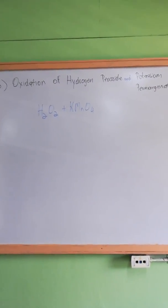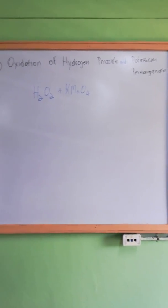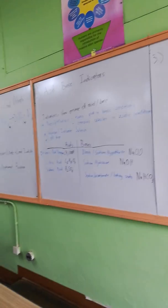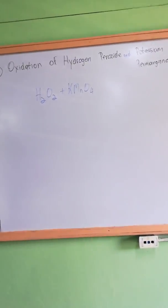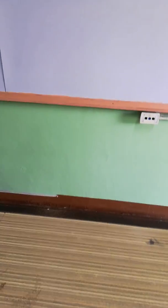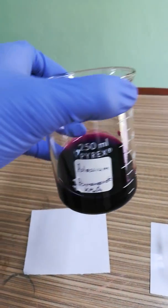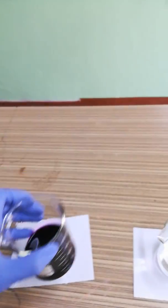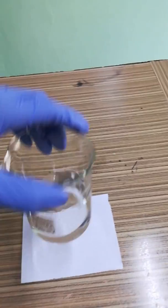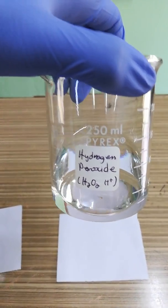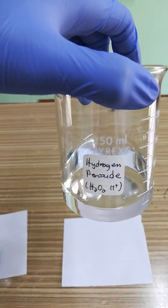The third experiment is the oxidation of hydrogen peroxide and potassium permanganate. I didn't write a formula because it's a bit tricky to explain, so I'll just show you the experiment itself. This purple thing is potassium permanganate KMnO4, and this is hydrogen peroxide that's been acidified with sulfuric acid.